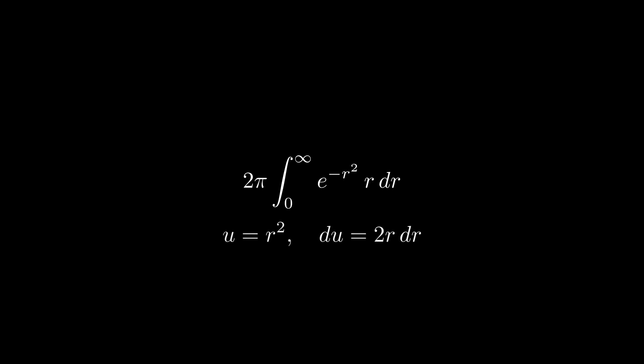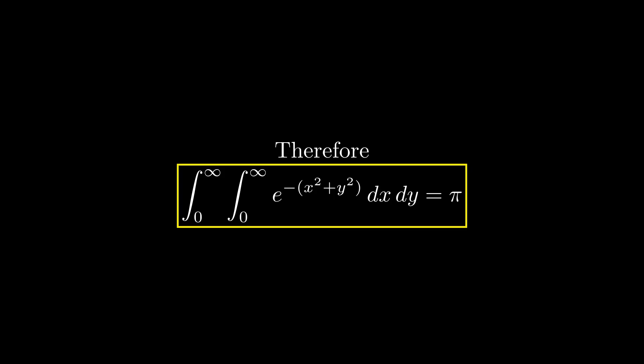To do that integral, we're going to want to do a u sub. When we do the u sub, we now get an integral of a simple exponential, do a little bit of simplification, do the integral, plug things in, and we end up with the answer of pi.